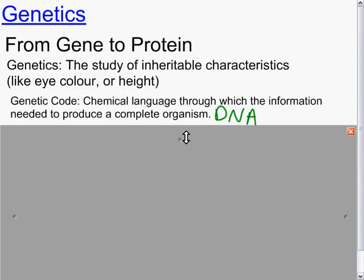The genetic code is the chemical language through which the information needed to produce a complete organism. Specifically, DNA.